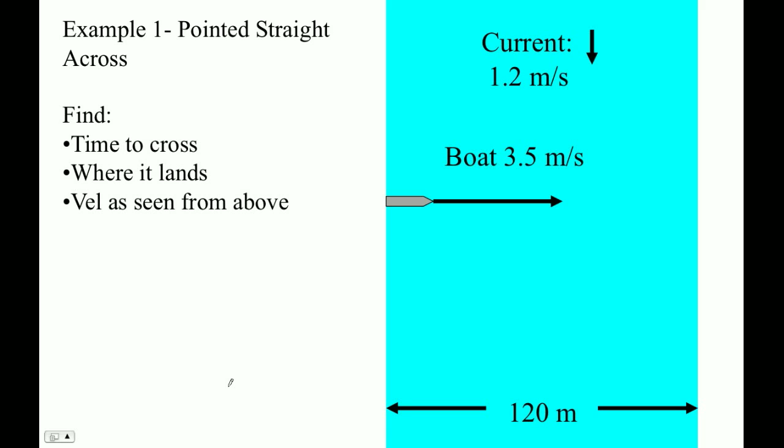In this video, I'm going to show you how to solve problems where a boat is crossing a river. Here's the velocity of the boat. It's going to move across the river, and the river is moving down at 1.2 meters per second.